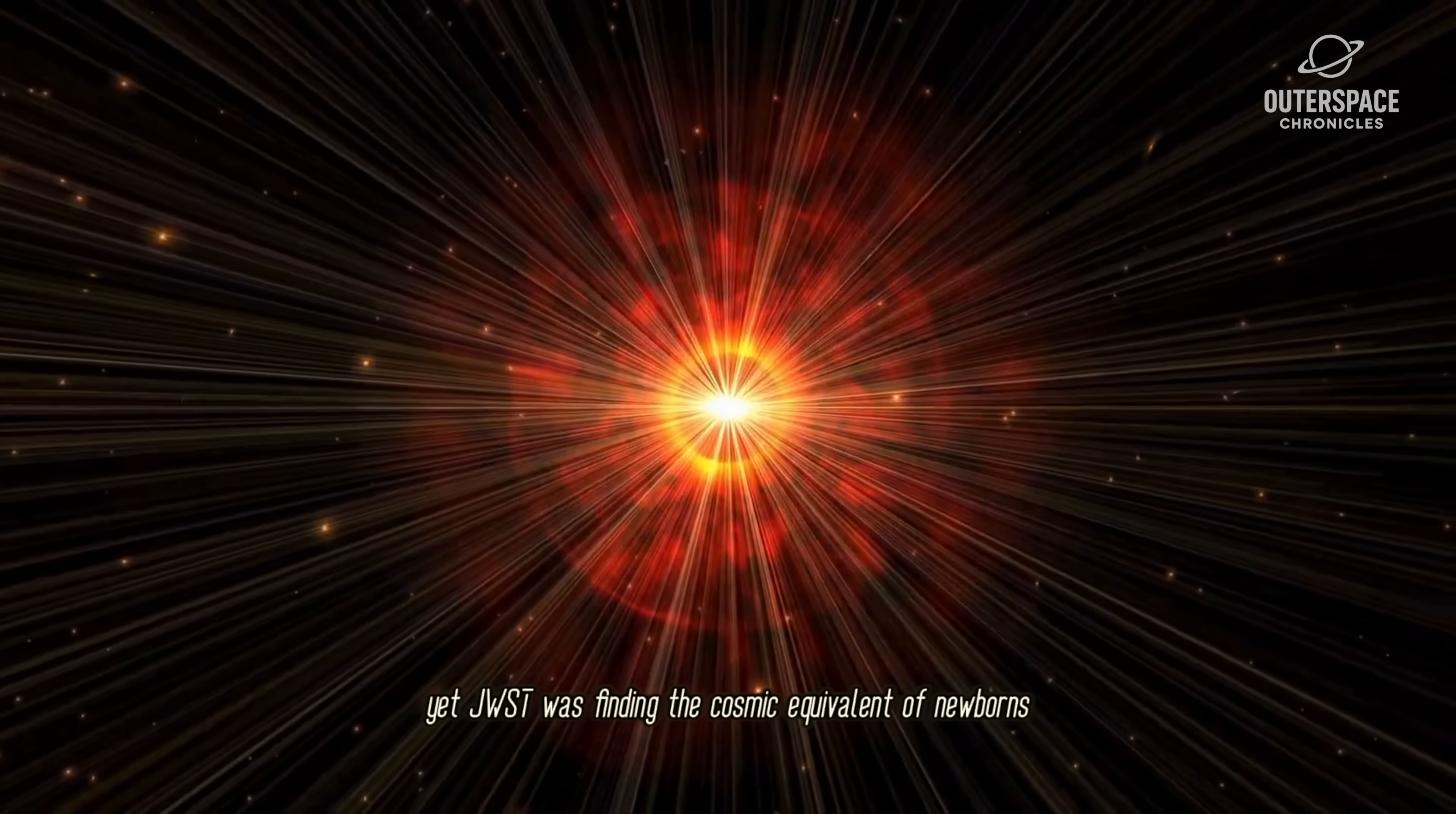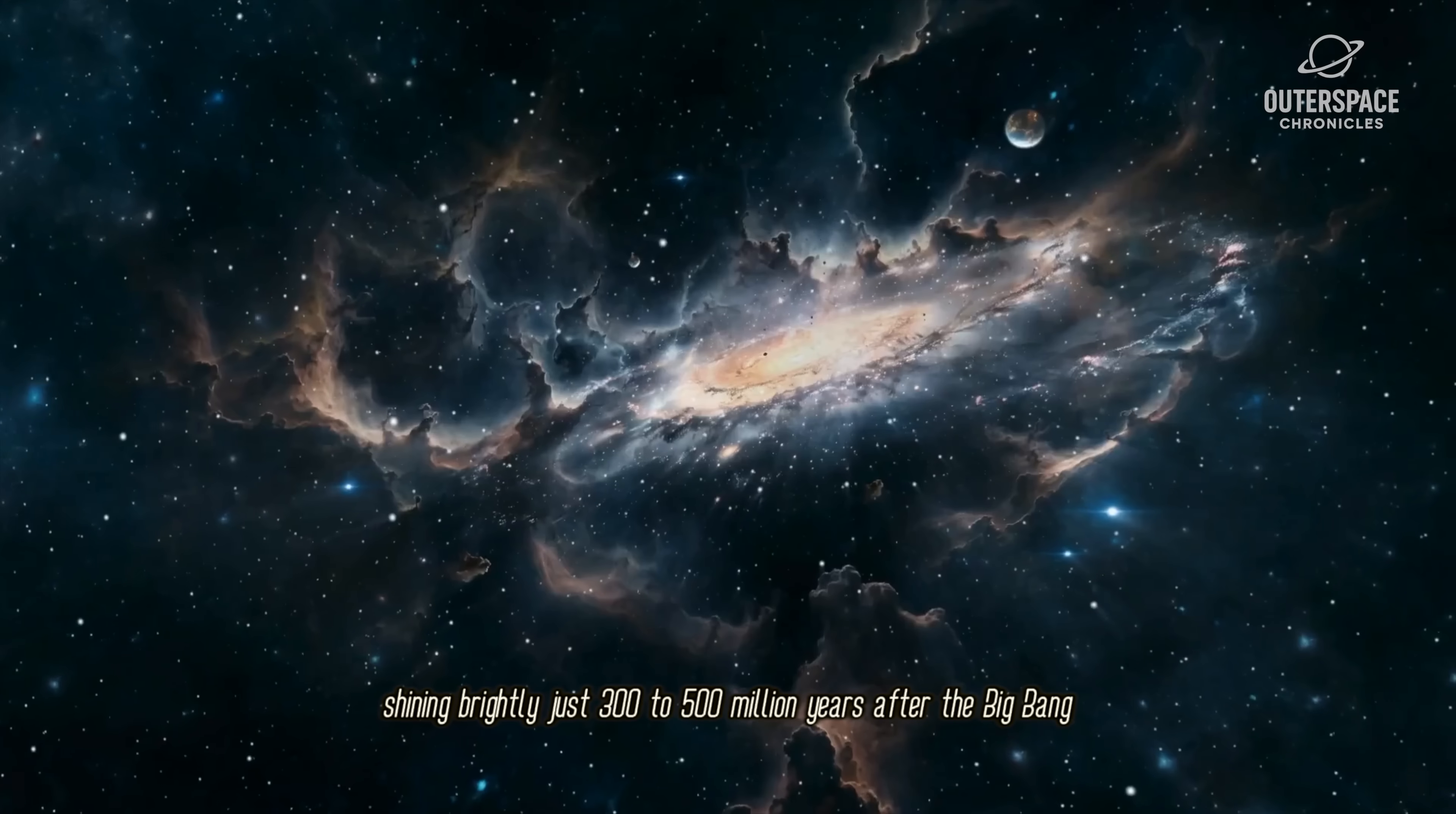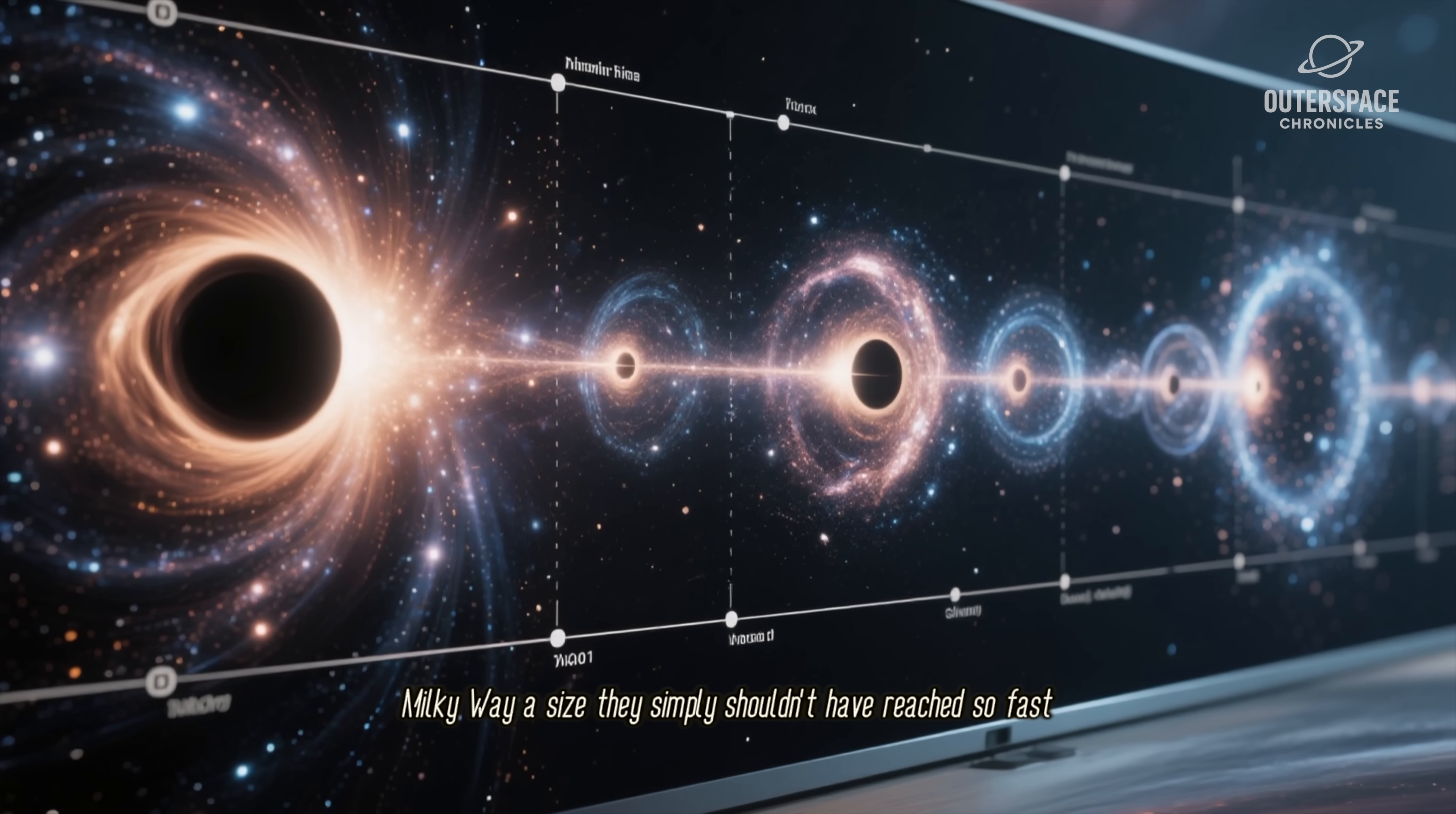Yet JWST was finding the cosmic equivalent of newborns that were already fully grown adults. It spotted massive, well-formed galaxies shining brightly just 300 to 500 million years after the Big Bang. Some of these cosmic metropolises appear nearly as large as our own Milky Way—a size they simply shouldn't have reached so fast. It's like building a skyscraper overnight.